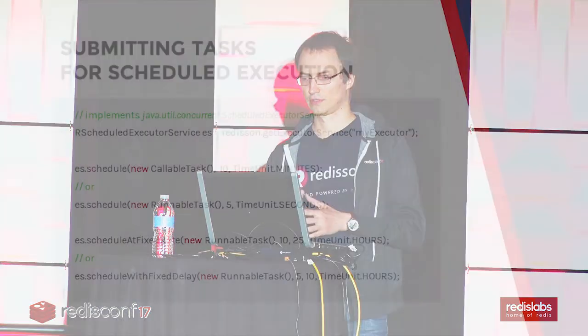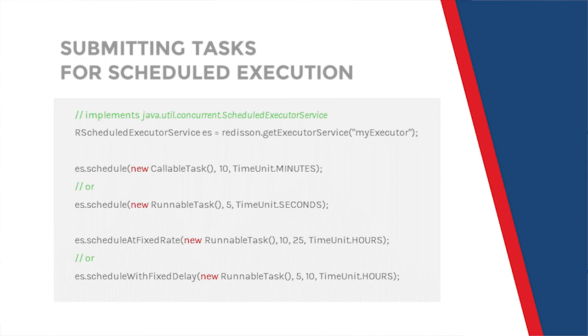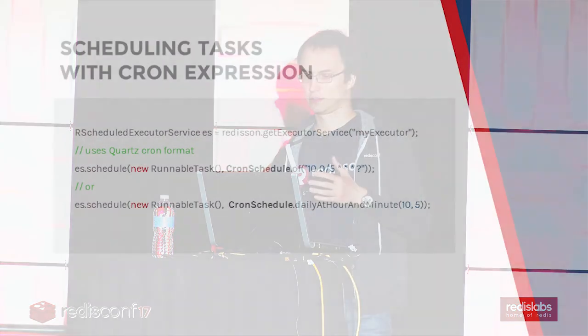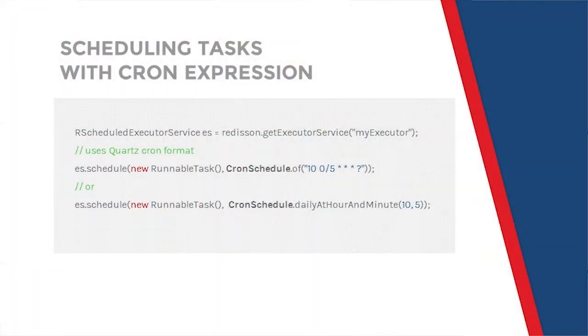And scheduled tasks are submitted using the scheduler service, which also implements a ScheduledExecutorService interface from the Java concurrent package. Tasks could be scheduled for one-time execution, or scheduled for multiple executions with a defined fixed rate or fixed delays between each execution. The task scheduler service also allows developers to define more complex scheduling using cron expressions. These cron expressions are fully compatible with the Quartz cron format.